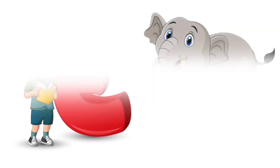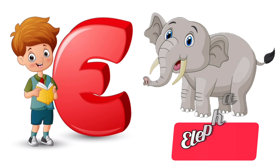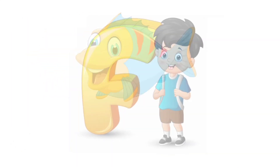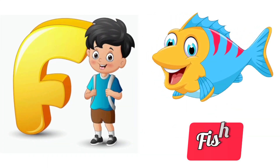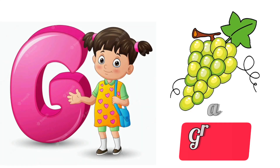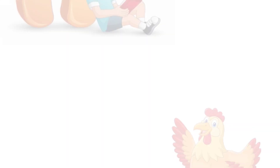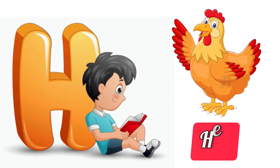E for Elephant. F for Fish. G for Grapes. H for Hen.